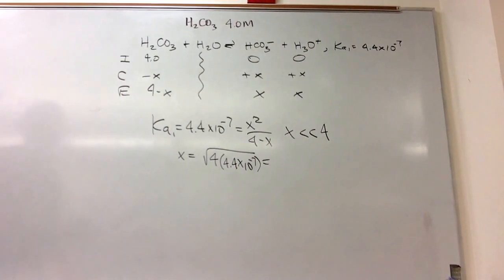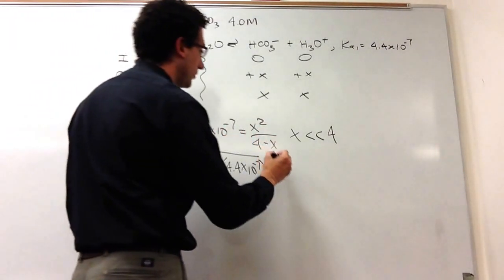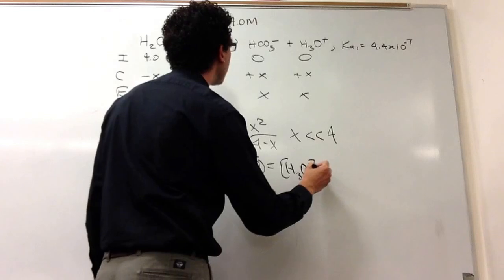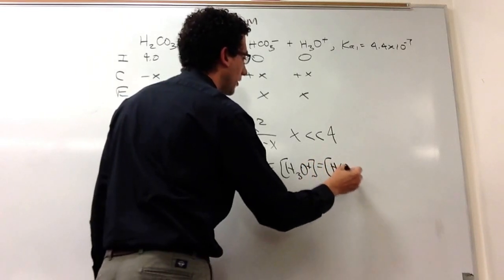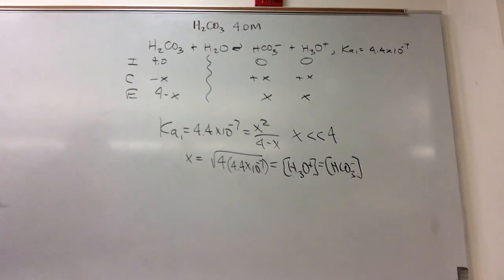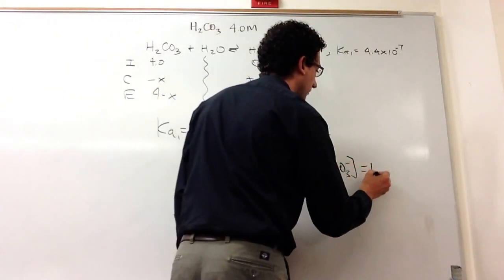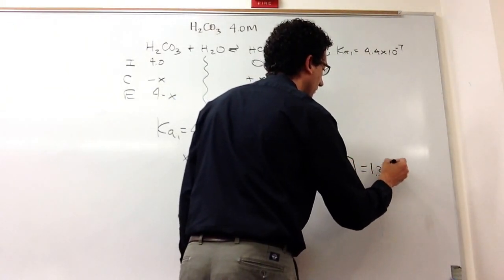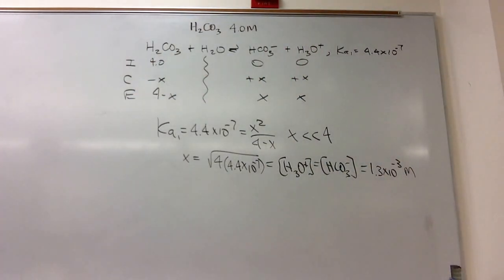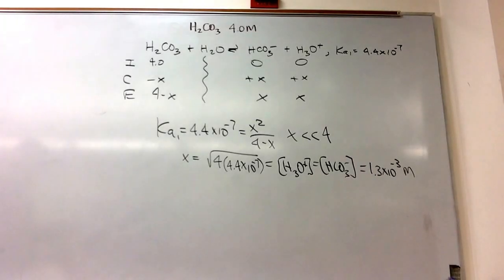Okay, so this is going to be equal to the H3O plus concentration and the HCO3 minus concentration. So it's 1.33 times 10 to the negative 3. That's going to be a molarity. So cool, now we have that equilibrium concentration. So that's a good start for us.